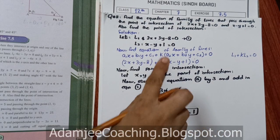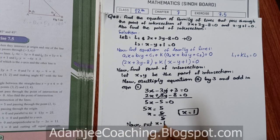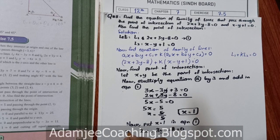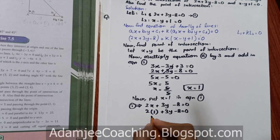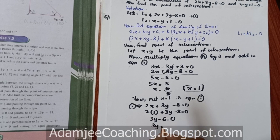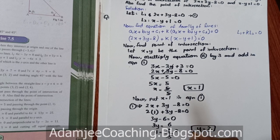Now put x equals 1 in equation 1: 2x plus 3y minus 8 equals to 0. Substituting x=1: 2(1) plus 3y minus 8 equals 0, which gives 2 plus 3y minus 8 equals 0. So 3y minus 6 equals 0, meaning 3y equals 6, therefore y equals 2.